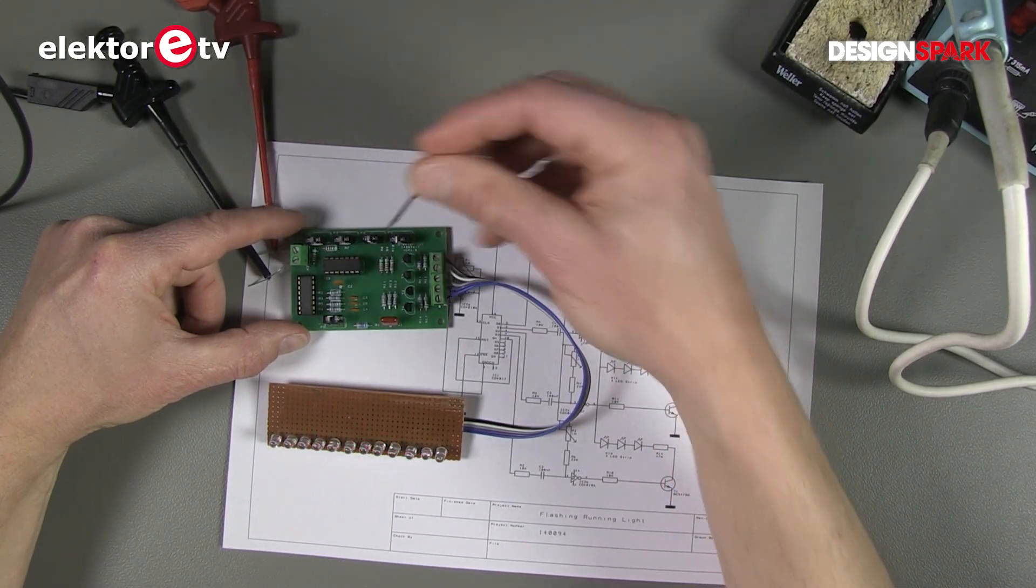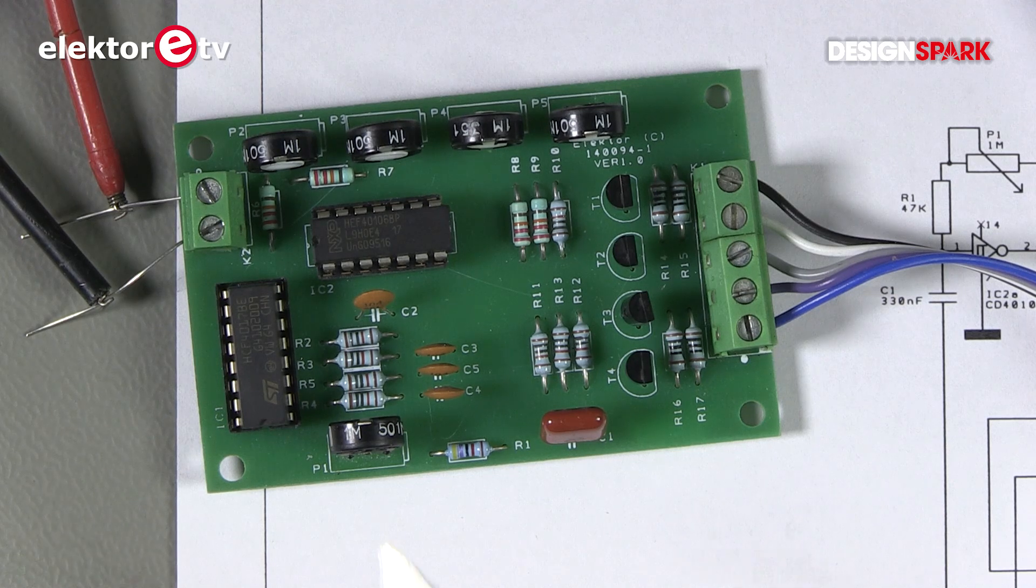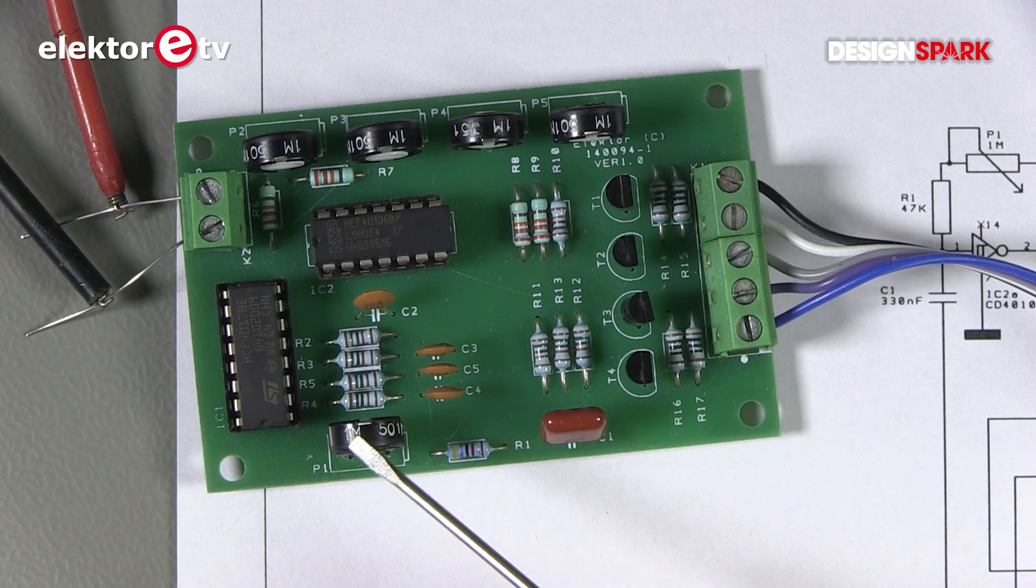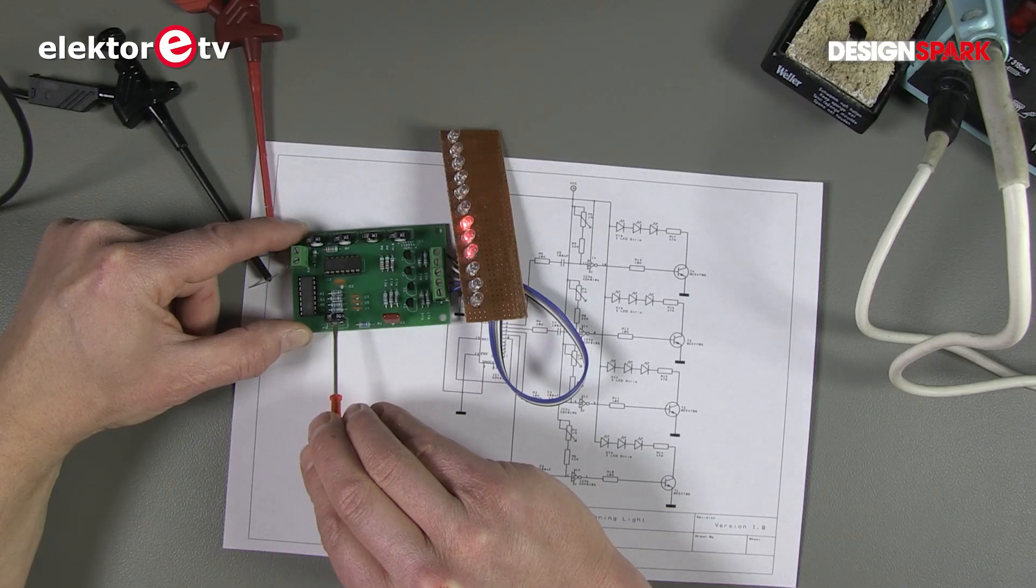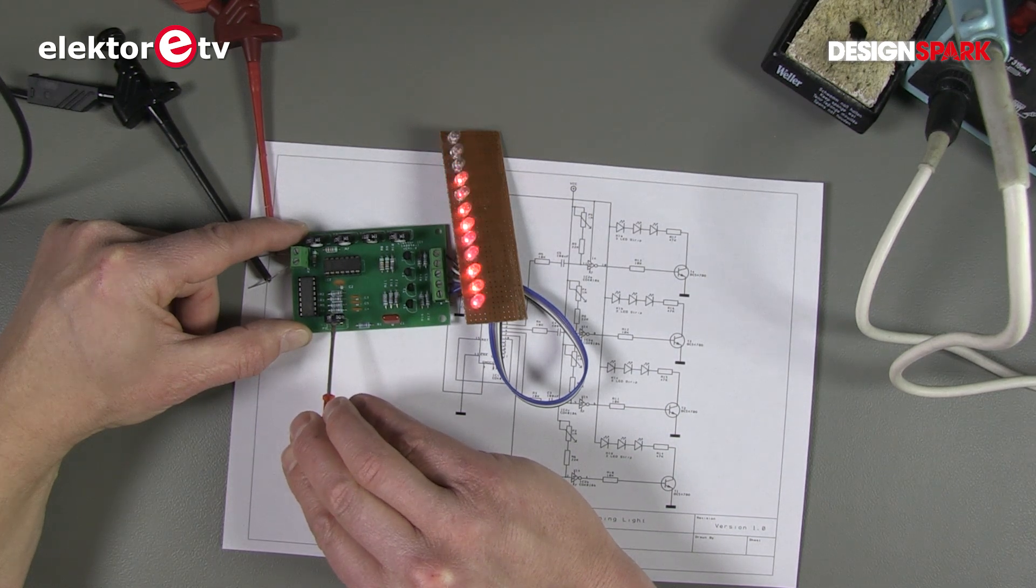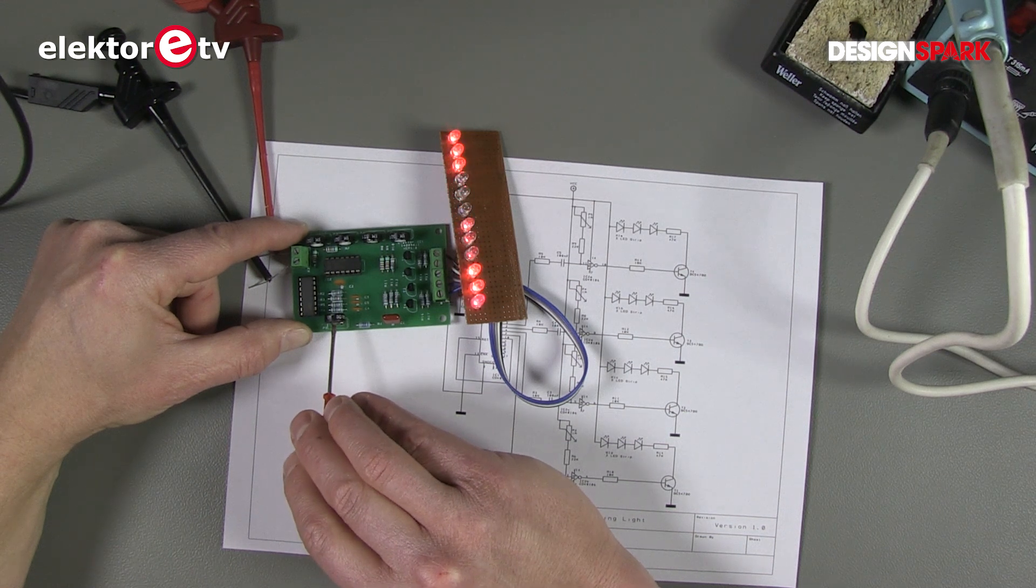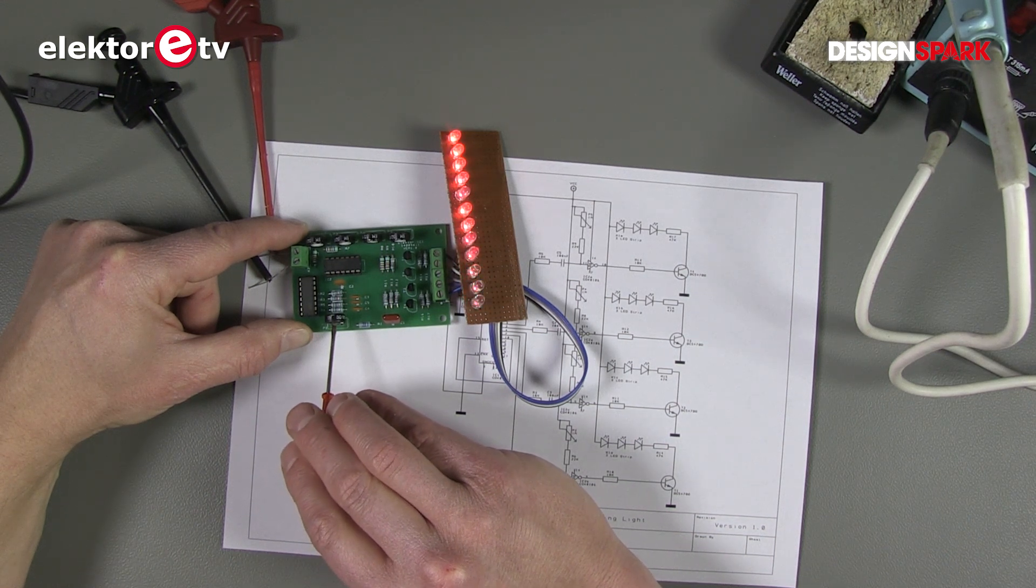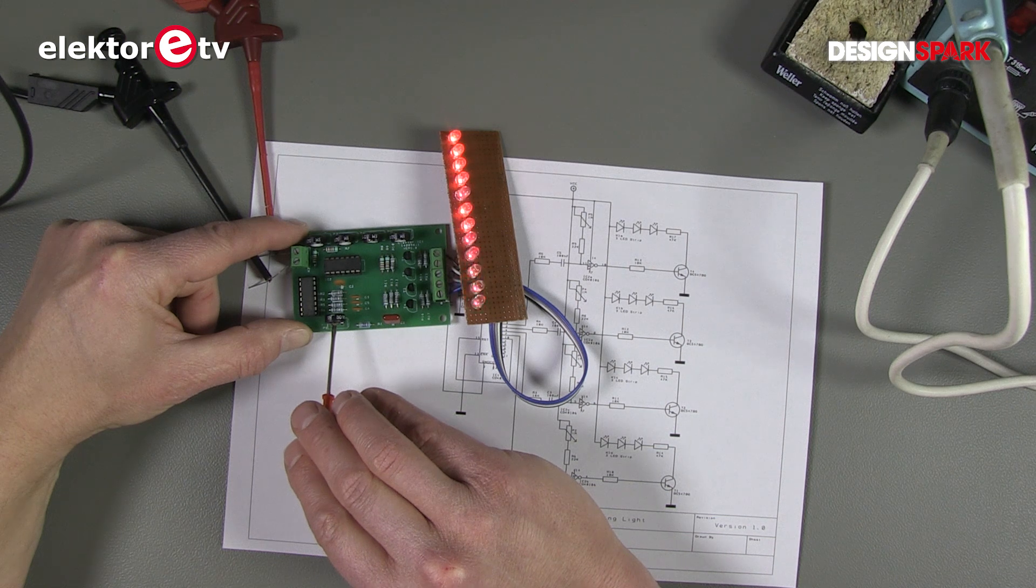Okay and of course the running light needs the speed control. This one has one here in shape of this trimmer. And there we go. Faster and faster. It's really fast. I cannot follow this. I think it looks like one bright light.